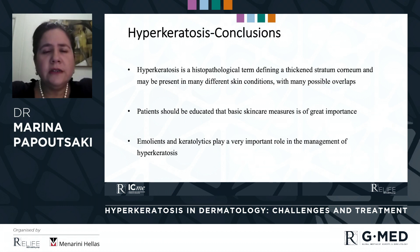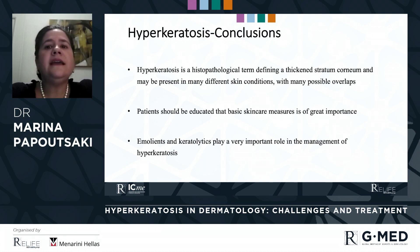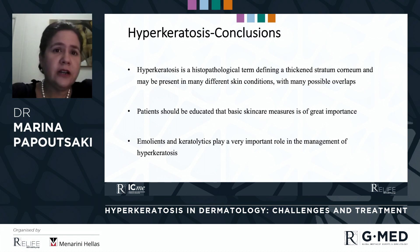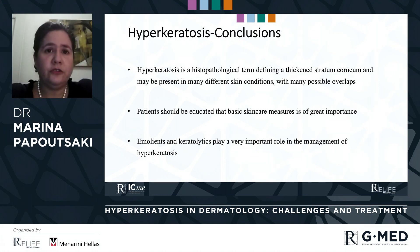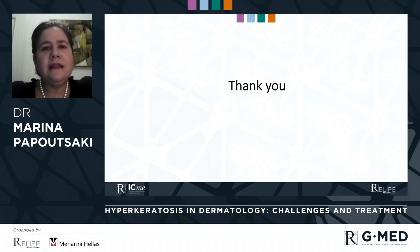In conclusion, hyperkeratosis is a complex histopathological term defining a thickened stratum corneum, present in many different skin conditions with many possible overlaps. Patients should be educated that basic skin care measures are of great importance as first-line treatment, but also in combination with other topical, pharmacological, or systemic treatments. Emollients and keratolytics play a very important role, and in the next presentation Professor Michali will discuss the role of urea, one of the most commonly used keratolytics and emollients for this kind of condition. Thank you for your attention.